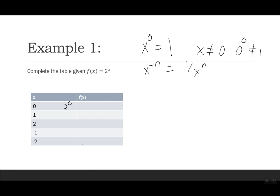Starting the table: 2 to the 0 is 1; 2 to the 1 is 2; 2 squared is 4. For negatives: 2 to the negative 1 is one half, and 2 to the negative 2 is one over 4. You can use your calculator for these. Pay attention in your homework whether it asks for a fraction or allows a decimal, to make sure you get the right answer.